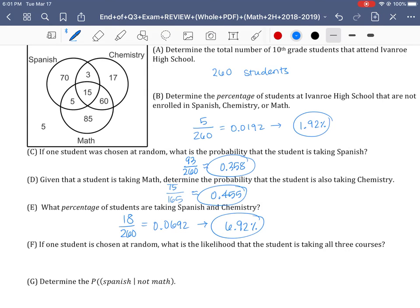If one student is chosen at random, what is the likelihood the student is taking all three courses? You guys are really good at these ones. We just look in the middle here, right? 15 out of the total here, so 260. And that would be about 0.0577.